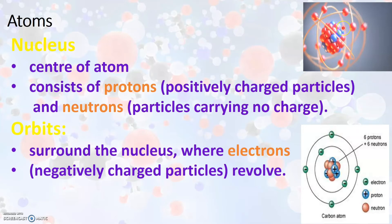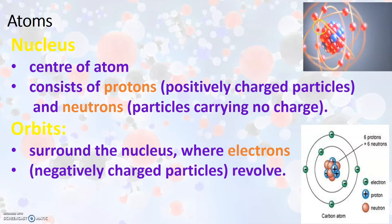This is a three-dimensional representation of an atom. The nucleus is at the center, consisting of positively charged protons and uncharged neutrons. Orbits surround the nucleus where the negatively charged particles called electrons are revolving.